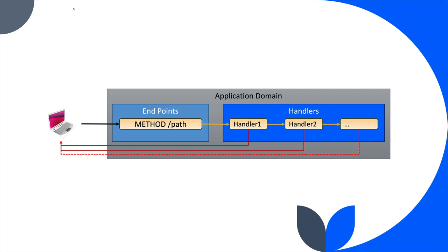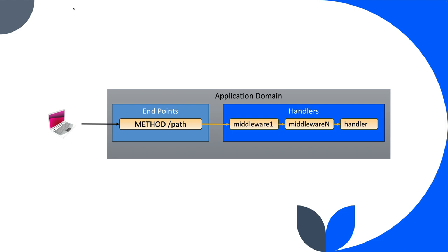There's another way to look at this: all of the handlers before the last one are middlewares — that's the special name we give to those handlers that call next. A route can have many middlewares attached, and then at the end is a single handler. A middleware is a handler; the only thing that makes it special is that it calls next, whereas the final handler is intended to actually handle that request.